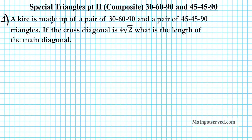It says a kite is made up of a pair of 30-60-90 and a pair of 45-45-90 triangles. The cross diagonal is 4 root 2. What is the length of the main diagonal? So what we're going to do is make a sketch of this situation and then label our cross and main diagonals and also the angles.